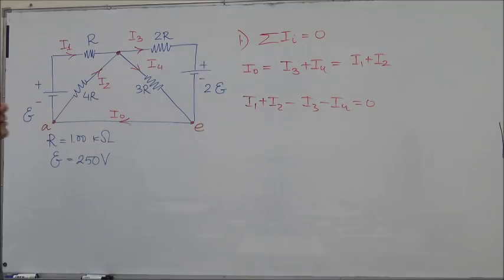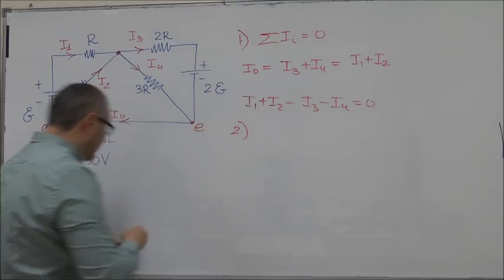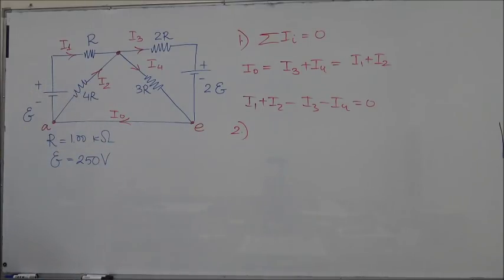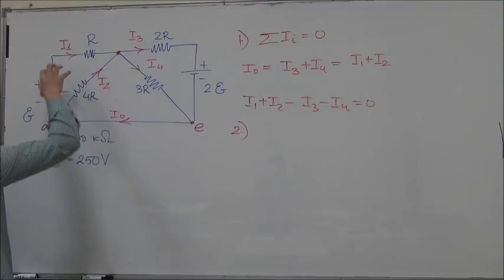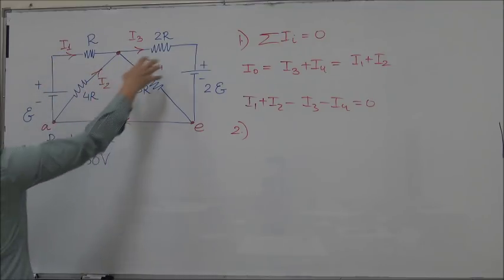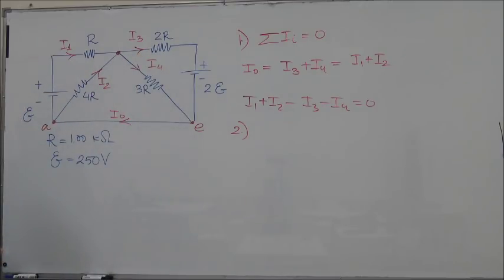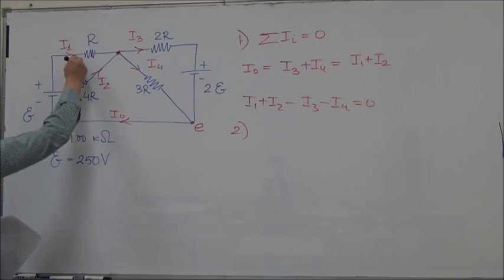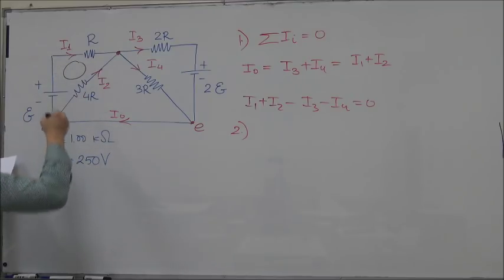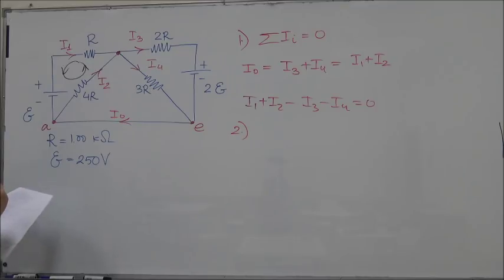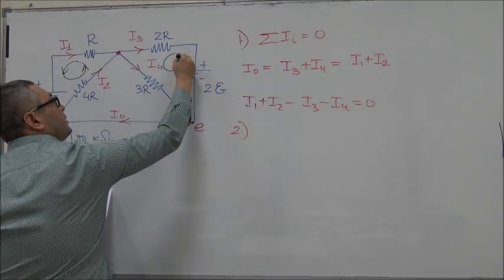Now let's apply Kirchhoff's second rule. To apply the second rule we first need to define the direction in which we're going to go along the loops. We have one, two, three, four, five, and six different loops. You don't really need to use all of them because some of the equations will be redundant.